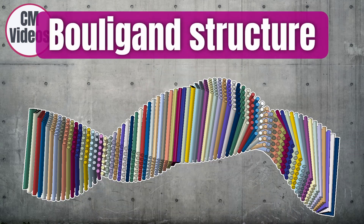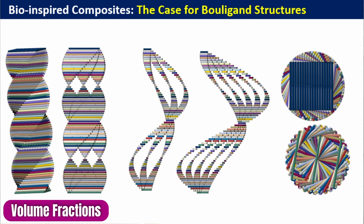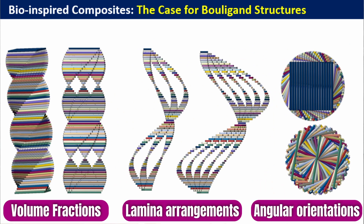At the end of this video I'll be showing you how to construct a Bouligand structure, which is the main underlying structure for the weapon that this mantis shrimp uses. We're going to look at different volume fractions, different lattice arrangements, and also different angular orientations of this Bouligand structure. Let's get started with this modeling.